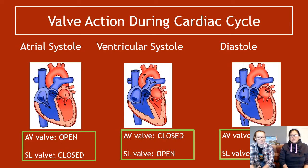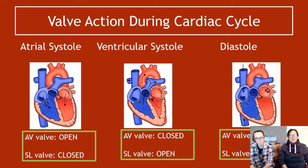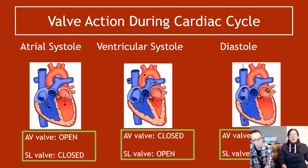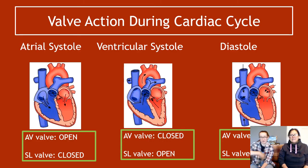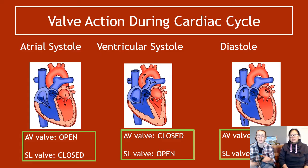You need to know which valves are open and shut during which phases. A common exam question is: state the valves that will be open or closed during atrial systole, ventricular systole, or diastole. During atrial systole, if blood has to get from the atrium to the ventricle, the AV valve is going to be open. But during this stage, the semilunar valve — the SL valve — is going to be closed.